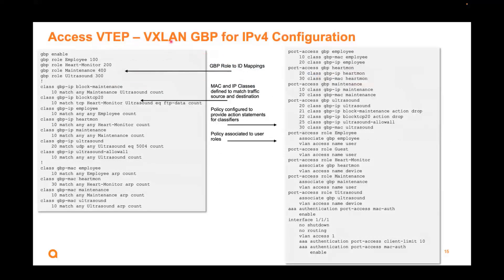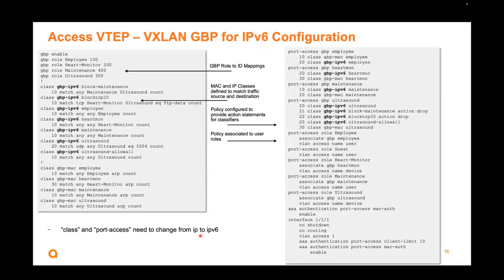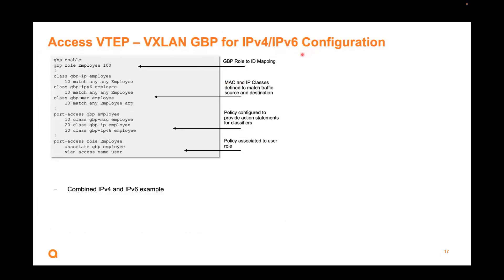Here's a sample of the existing access VTAP configuration for IPv4 for reference. You define the GBP role-to-ID mapping — for example, employee is GBPID 100. You define MAC and IP classes, match traffic types like TCP, and set the policy to drop or allow. The policy is then associated to user roles. For IPv6, the concept is the same but the commands change to IPv6. For a combined V4 and V6 setup on the access VTAP, you use GBP IP for V4 and IPv6 for V6, plus the MAC class.